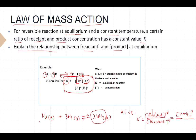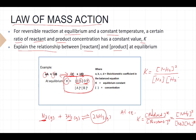To write it clearly: the reactants are N₂ and H₂. N₂ has a coefficient of 1, so you don't need to write the power. H₂ has a coefficient of 3. So K equals [NH₃]² divided by [N₂] times [H₂]³. This is the Law of Mass Action expression written out for this reaction.